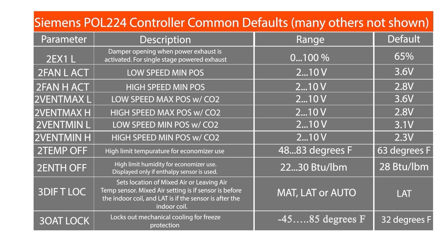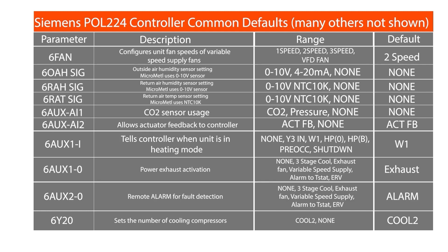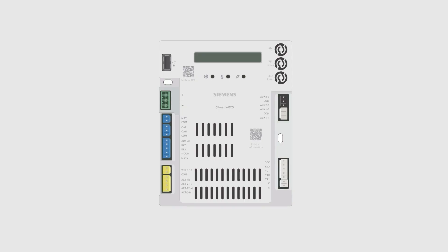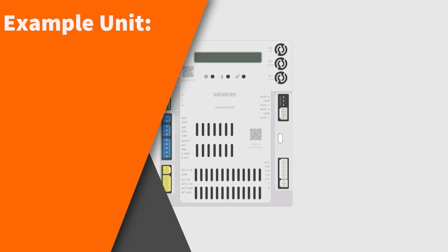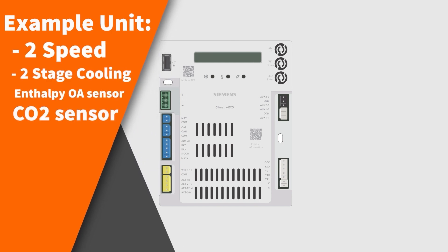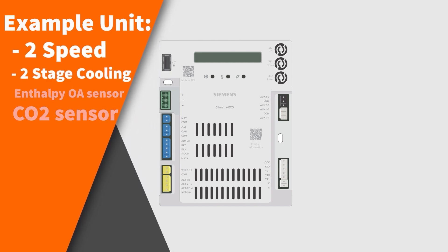The controller has defaults set for typical installations, though some units and some applications require changes from the default settings. This chart shows some of the more common controller defaults. For this example, we are going to set up a two-speed, two-stage cooling unit with an enthalpy outside air sensor and a CO2 sensor.